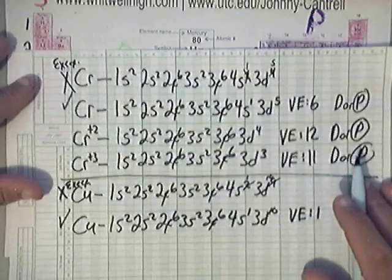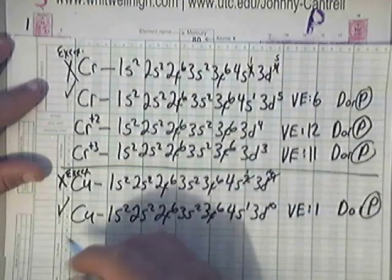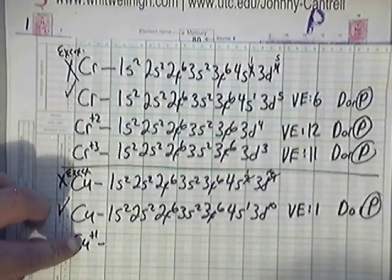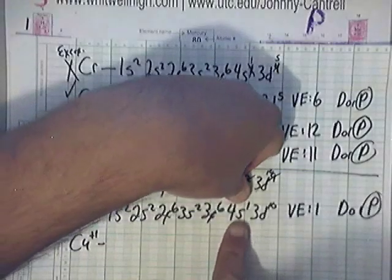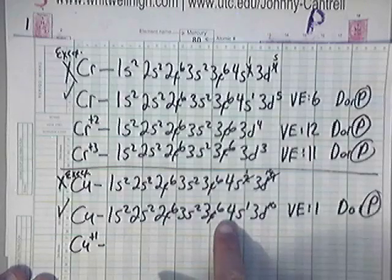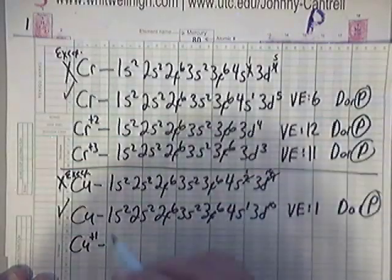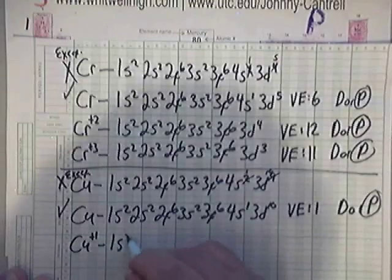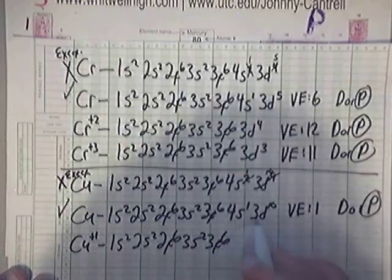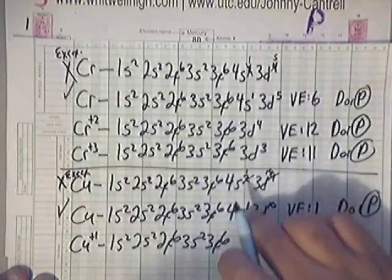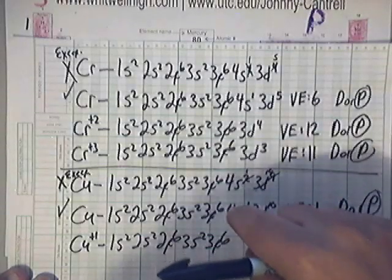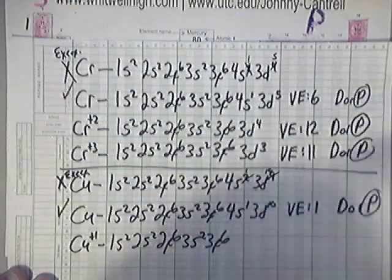Let's look at an ion of this — Cu+1, the copper 1 ion. Basically, it's got to throw away one electron. It's going to throw away the 4S1 because it's the highest energy level and the largest principal quantum number, 4. So the Cu+1 configuration is 1S2, 2S2, 2P6, 3S2, 3P6 — remember, it throws away the 4S1 because it's got to throw away one electron from the outermost orbital, the highest principal quantum number, which is 4.